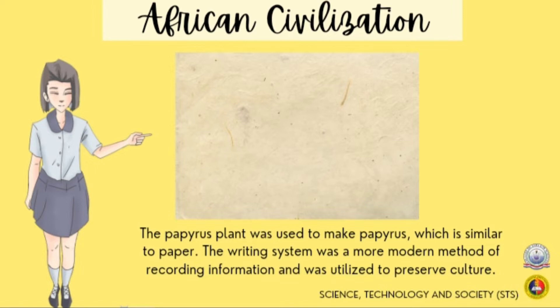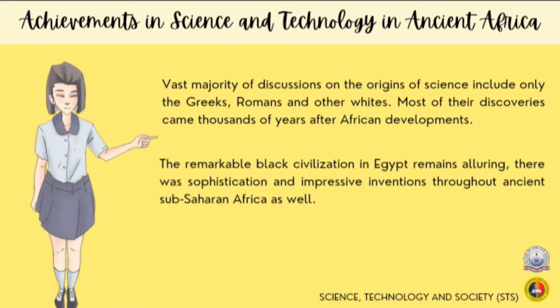Papyrus is a writing material made from the papyrus plant. It was used as writing material as early as 3000 BC. This lineage and culture of achievement emerged at least 40,000 years ago in Africa. Unfortunately, few of us are aware of these accomplishments, as the history of Africa beyond ancient Egypt is seldom publicized. The vast majority of discussions on the origin of science include only the Greeks, Romans, and other whites. But in fact, most of their discoveries came thousands of years after African developments.